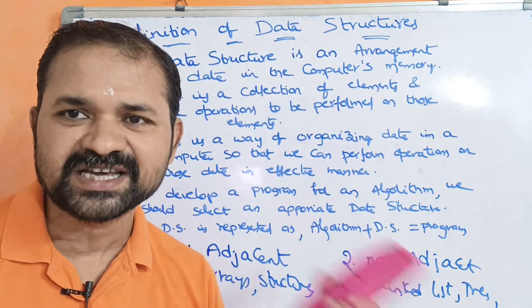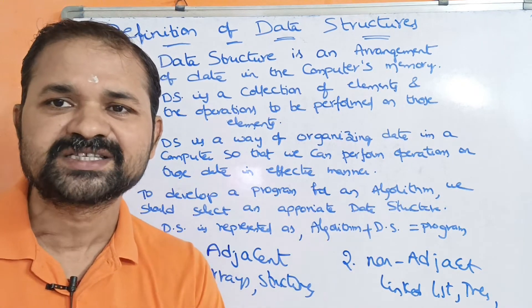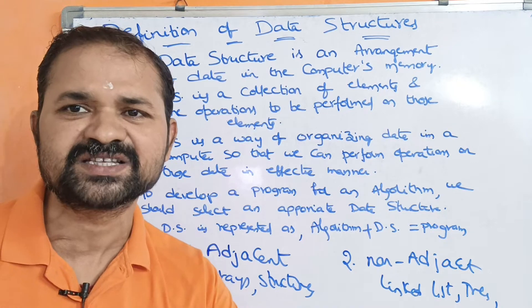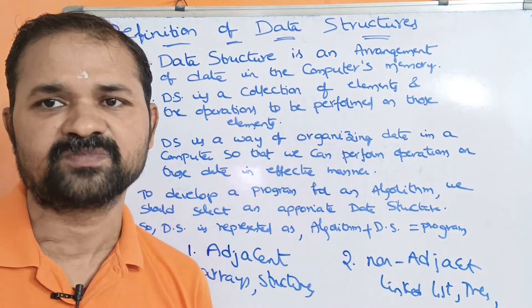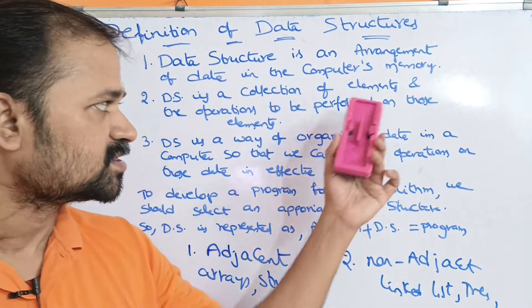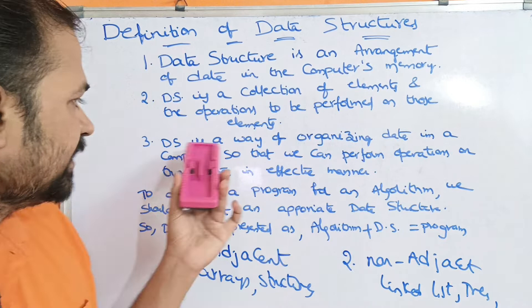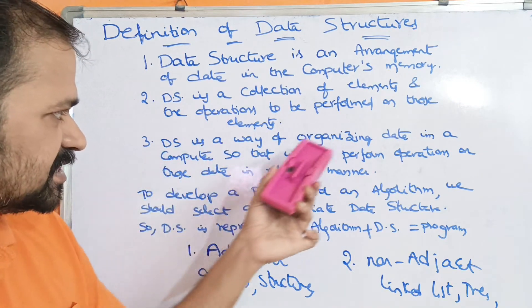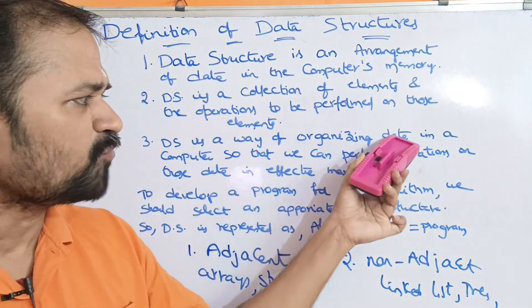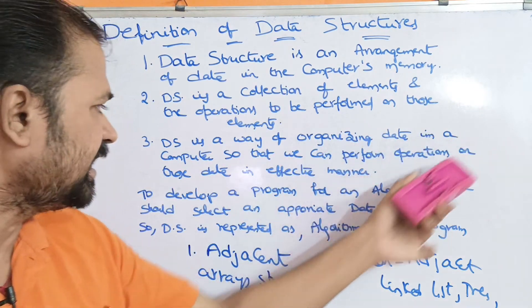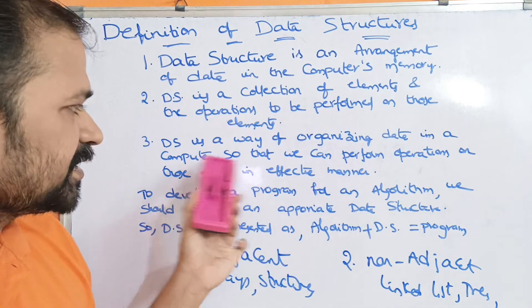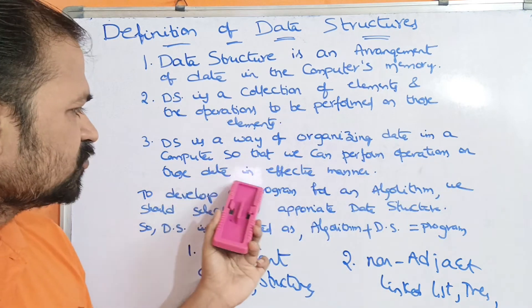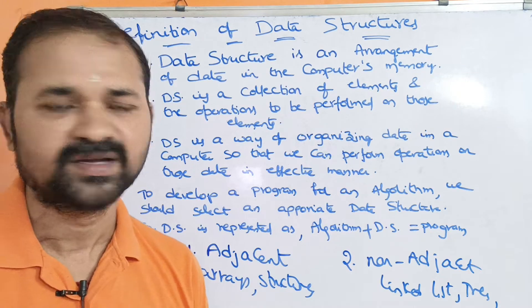Several operations can be performed on data structures, such as insertion, deletion, updation, searching, sorting, merging, and reversing. The third definition is: data structure is a way of organizing data in a computer so that we can perform operations on that data in an effective manner.